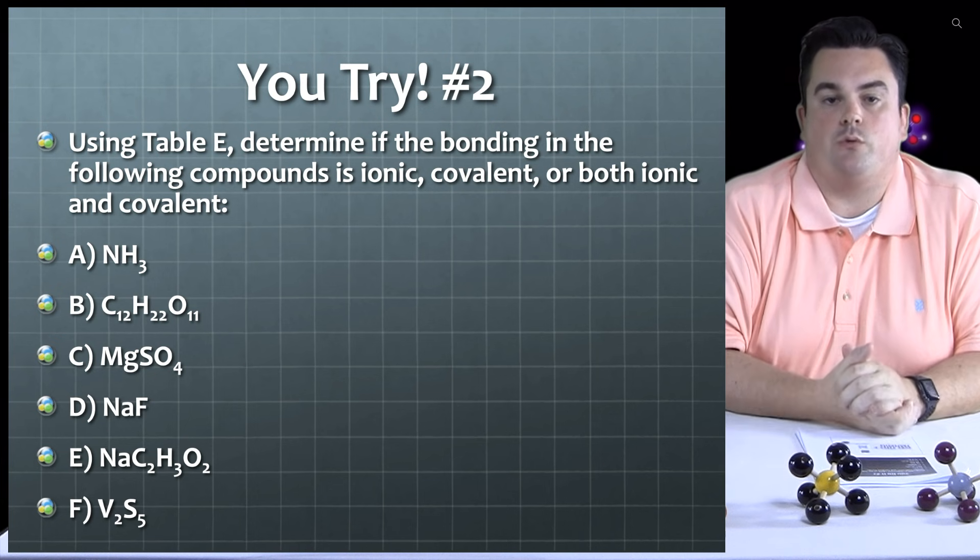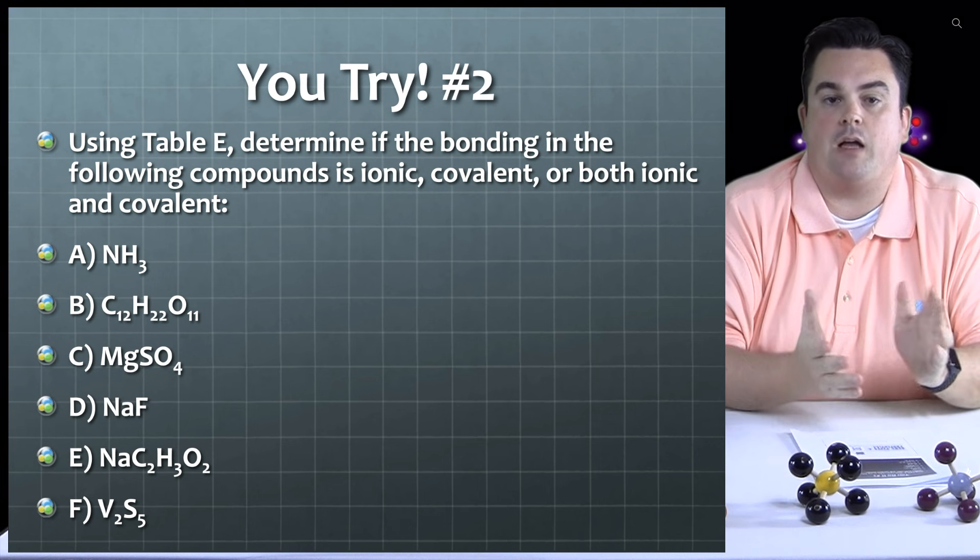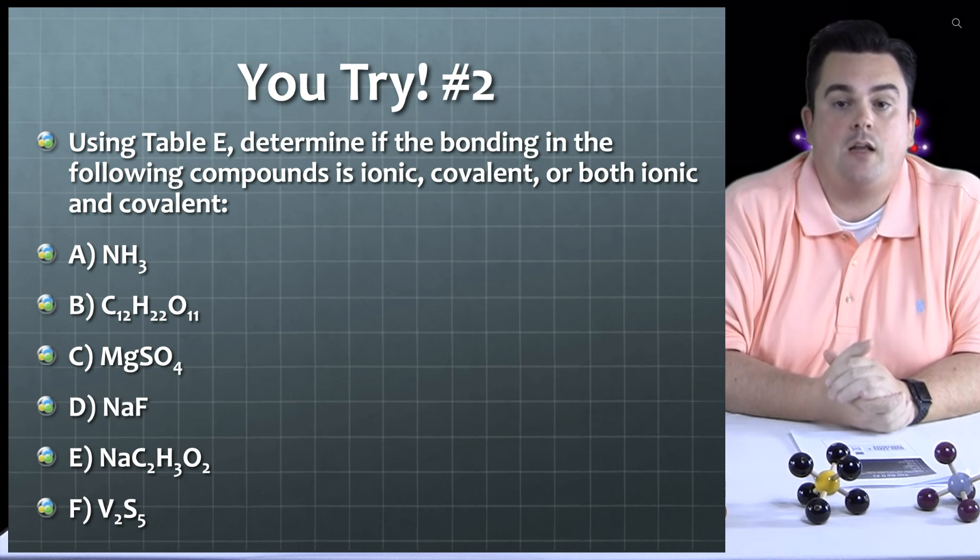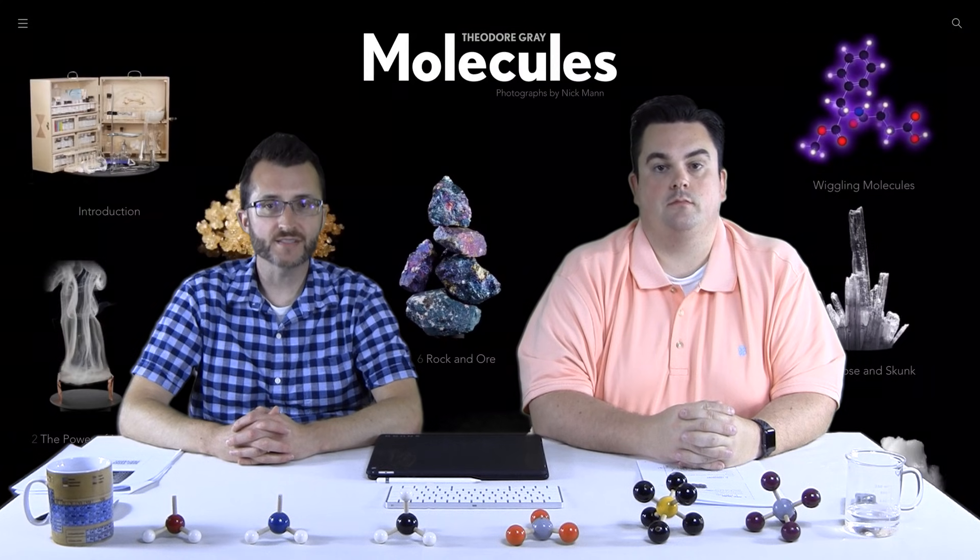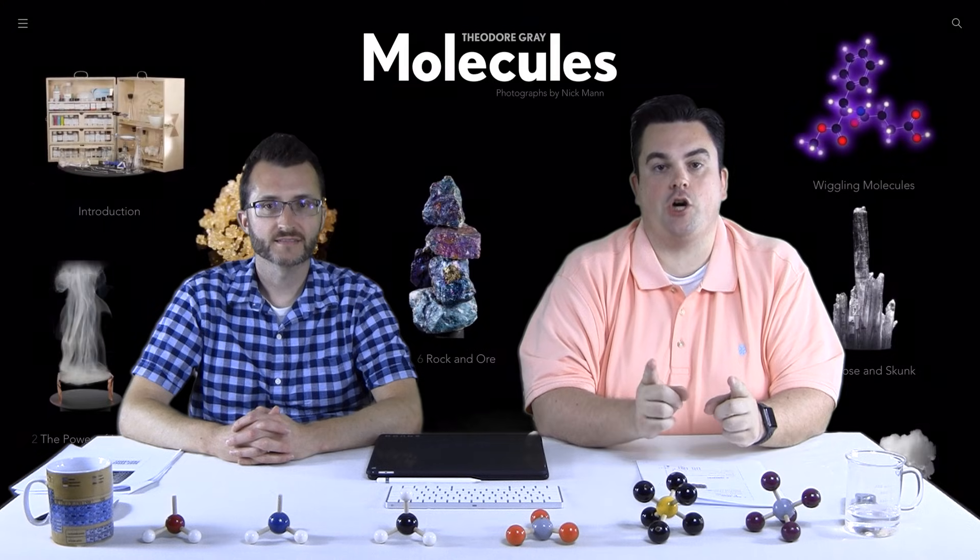Alright, you try number two. So using table E, determine if the bonding in the following compounds is ionic, covalent, or both ionic and covalent. That's going to do it for today's episode on bond types. Later, nerds!